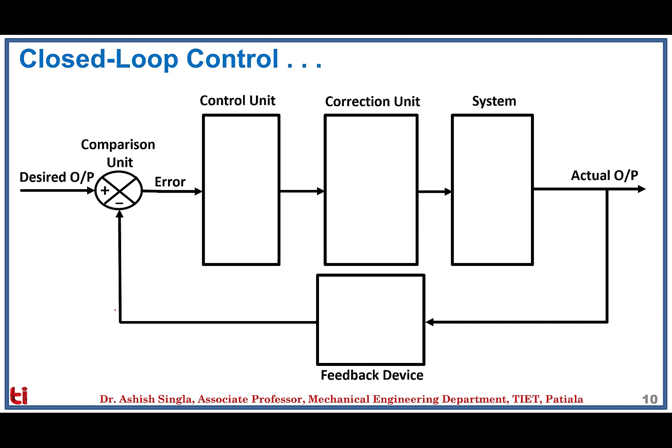Looking at the closed loop control system in more detail, it has three units: comparison unit, control unit, and correction unit. The comparison unit compares the difference between desired and actual output. The control unit takes the decision — it works as a mind. The correction unit executes the decision taken by the control unit, where all physical actuators reside to compensate for the error signal.